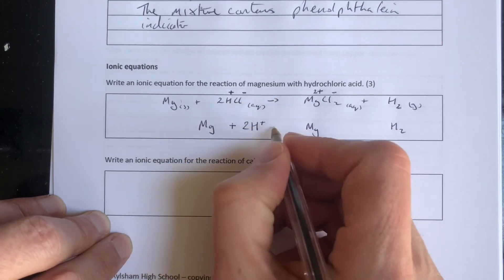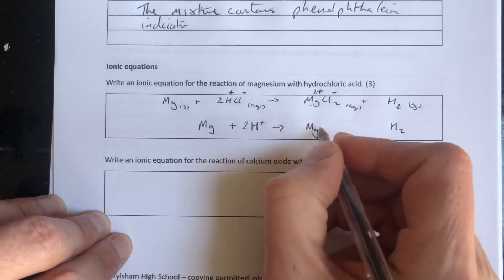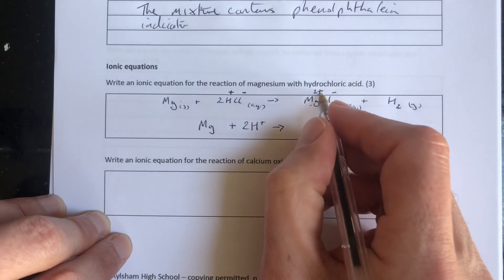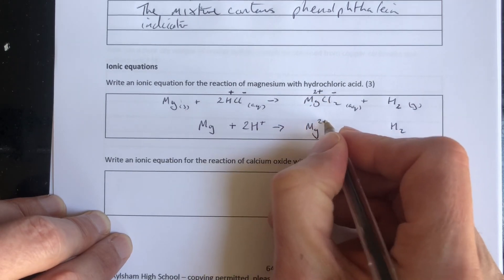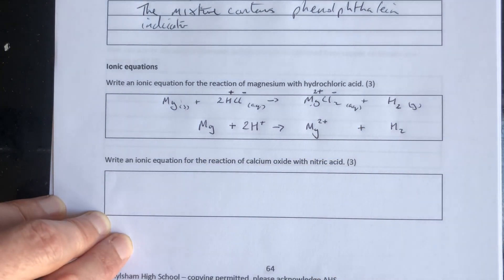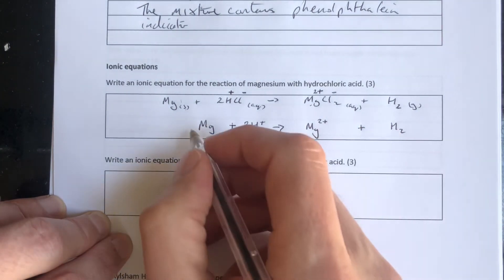So we had two hydrogen ions there. That was Mg2+. Now because the magnesium we're writing without the chloride, we do need to put the charge on that ion there. Plus H2. There is our ionic equation.